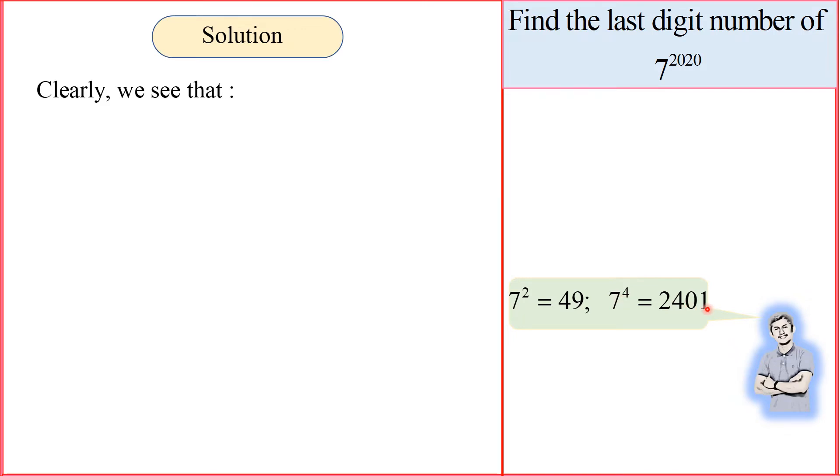It's pretty easy, but what about 7 to the 2020? It's tough, right? It's tough, but it's not as tough unless we solve it, we try to solve it. Let's figure out together.